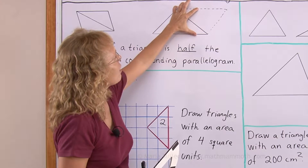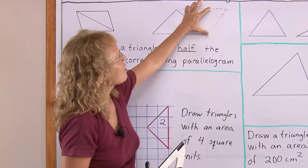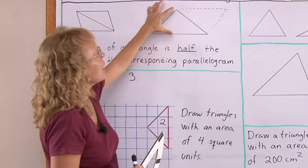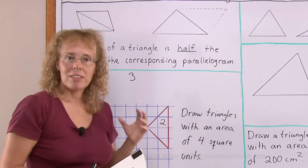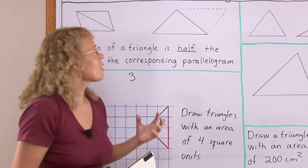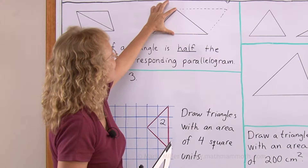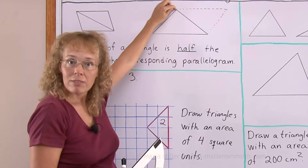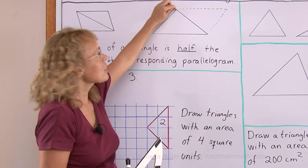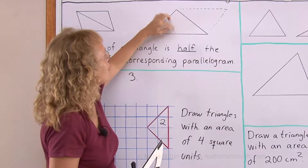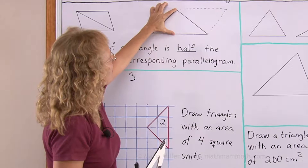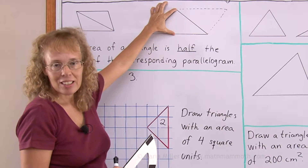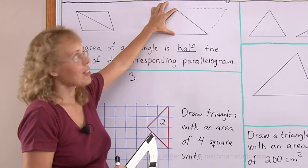The altitude can go anywhere between the two sides — here, or here, or here, wherever. But since we have this triangle to look at, we're going to put the altitude right here, coming down from the top vertex of the triangle. This would still be the altitude of the parallelogram too.